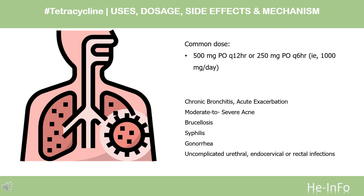Gonorrhea: recommended dose 500 mg PO every 6 hours for 7 days. Uncomplicated urethral, endocervical, or rectal infections in adults caused by Chlamydia trachomatis: 500 mg PO every 6 hours for at least 7 days.